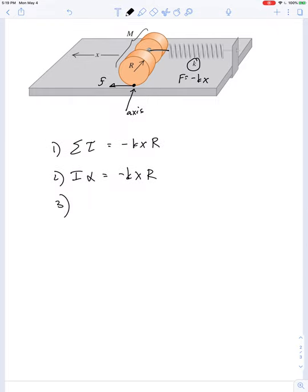That means I alpha is equal to negative kxr. So we need to substitute something for i and something for alpha. I know to substitute for alpha. That's d2 theta dt squared.